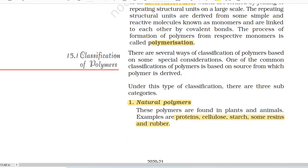The process of formation of polymers from respective monomers is called polymerization. 15.1 Classification of Polymers. There are several ways of classification of polymers based on some spatial considerations. One of the common classifications of polymer is based on source from which polymer is derived. Under this type of classification, there are three subcategories. First, natural polymers.